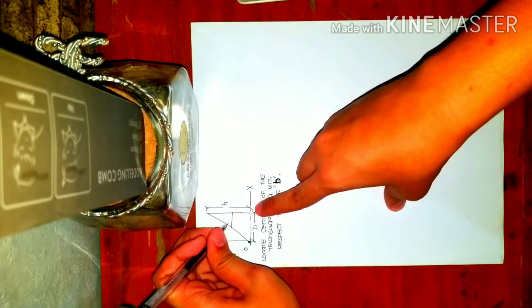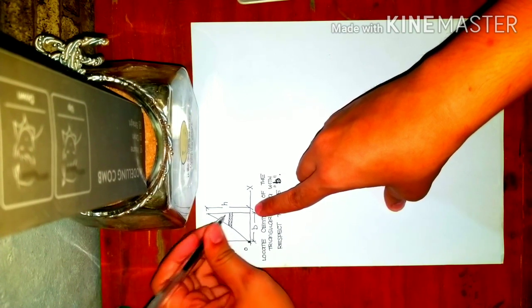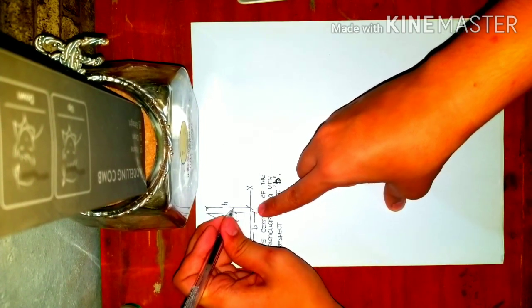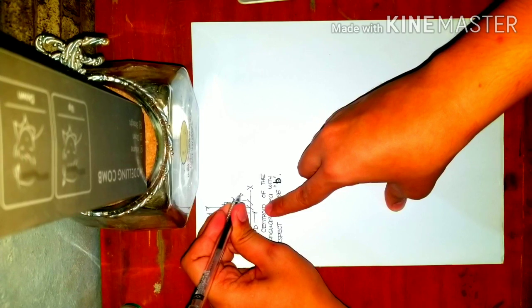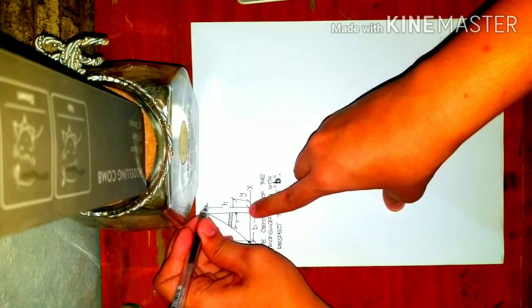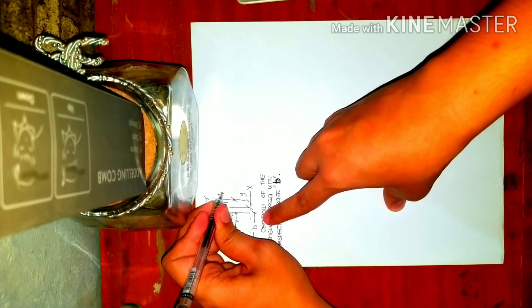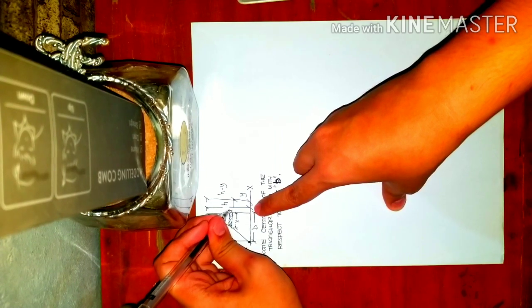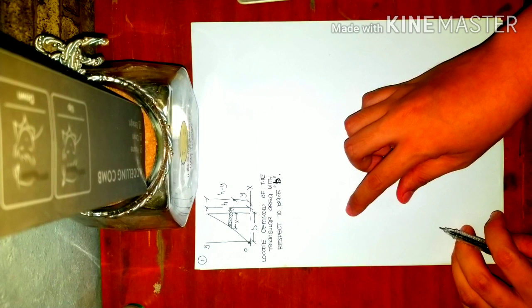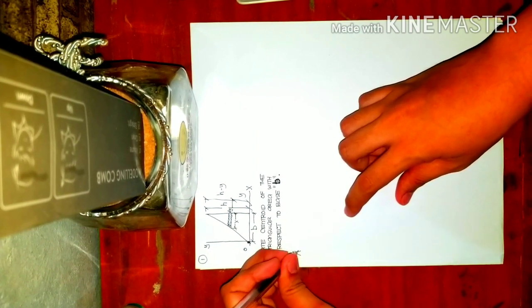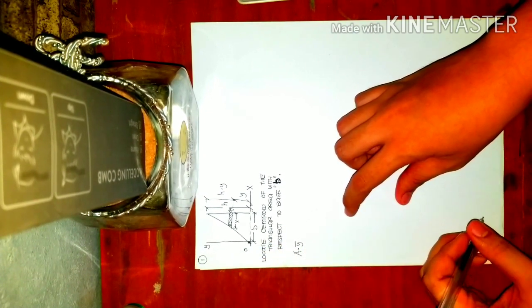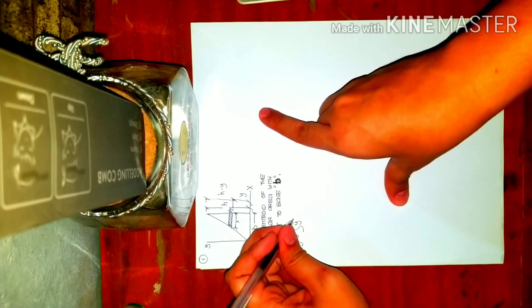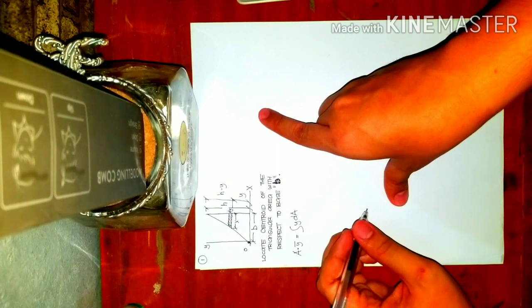The first thing to do is create a strip. Since we're finding the centroid with respect to the base b, we'll create a strip in terms of x, counting from the origin. This distance is y, and if this is y and this is h, then this value will be h minus y. The height of the strip is dy. The integral of area multiplied by y bar equals the integral of y multiplied by dA, where dA is the area of your strip.